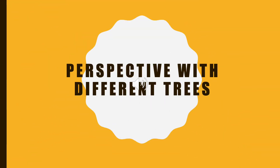Welcome. Today we are going to discuss perspective with different trees. First of all we should know about perspective. Perspective is what gives a three-dimensional feeling to a flat image such as a drawing or painting. In art, it is a system of representing the way that objects appear to get smaller and closer together the farther away they are from the viewer.